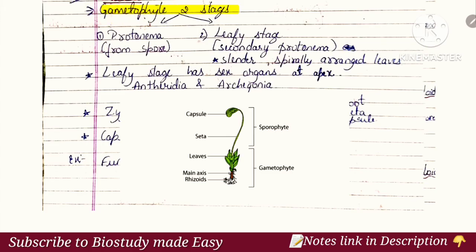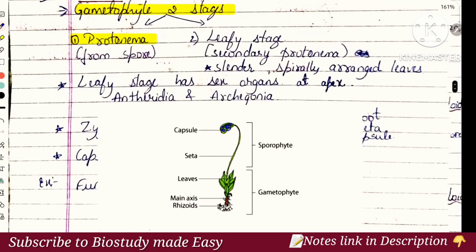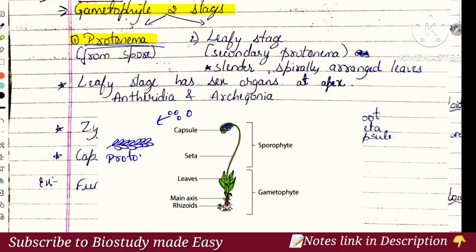In mosses, the gametophyte has two stages. First, spores germinate directly to form the protonema. The protonema then develops into the leafy stage. The leafy stage has spirally arranged leaves.